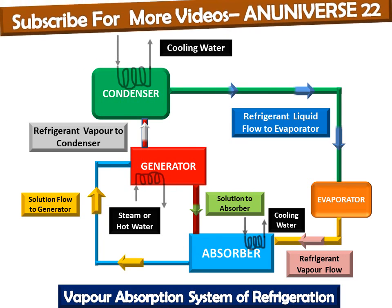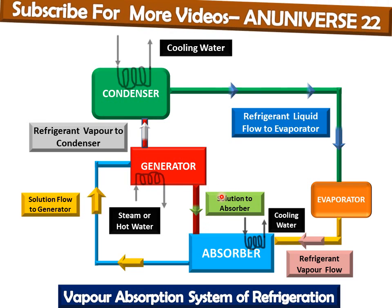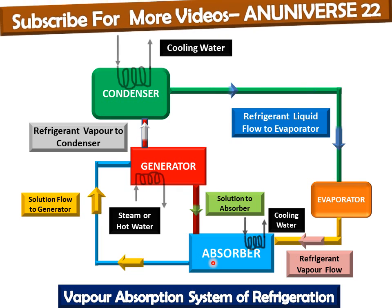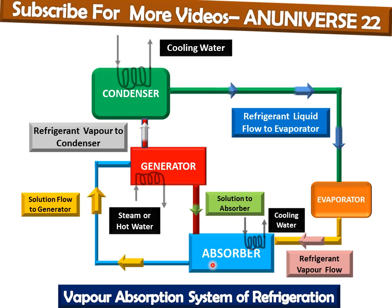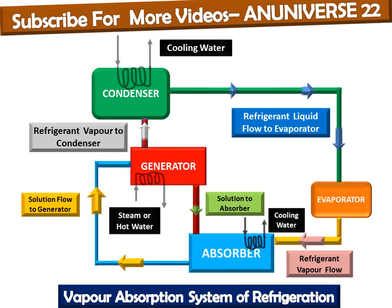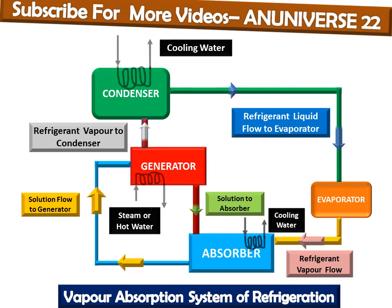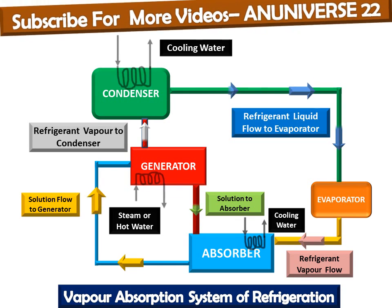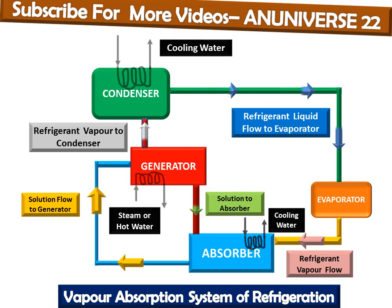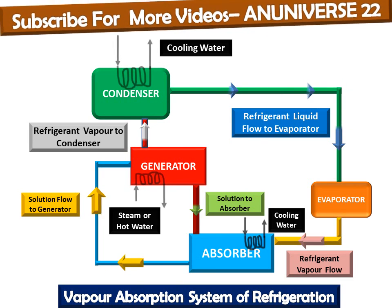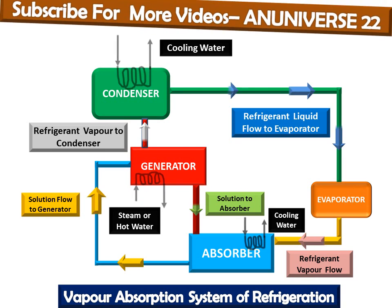An important point: the absorbent solution passing from the generator to the absorber is hot and must be cooled so it can absorb the refrigerant. On the other hand, the absorbent solution sent to the generator is cool and must be heated in the generator for regeneration of the refrigerant. A shell and tube heat exchanger is introduced between the generator and the absorber, though it is not shown in this diagram. Today we have learned about the vapor absorption system of refrigeration, its main parts, how it works, and how it differs from the mechanical vapor compression system.